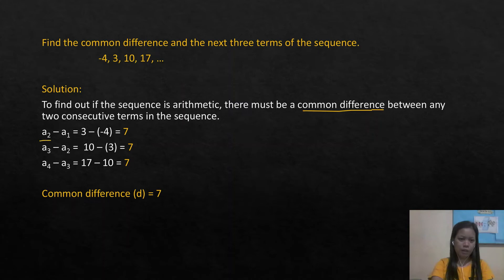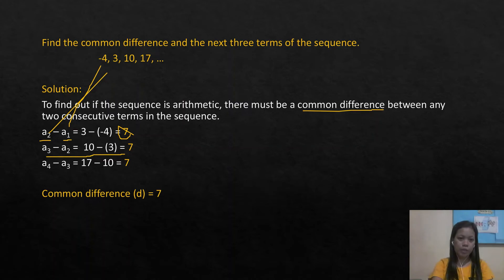For example, a₂ minus a₁: the second term is 3 and the first term is negative 4, giving a common difference of 7. Likewise, a₃ minus a₂: the third term is 10 and the second term is 3, also giving a common difference of 7. So our common difference is 7.